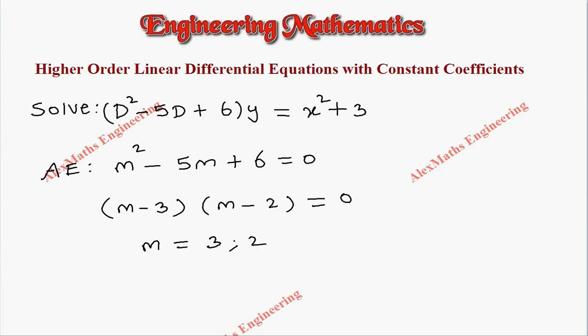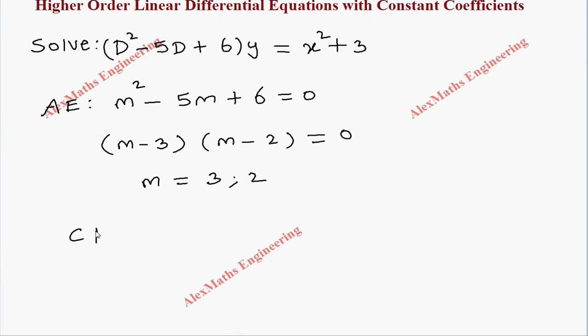So the complementary function is CF = c₁e^(3x) + c₂e^(2x).